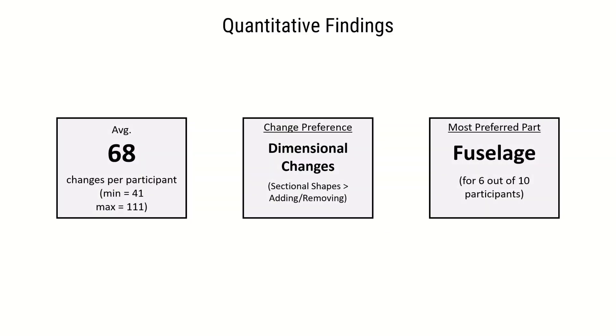The quantitative findings from our study showed that participants made an average of 68 changes, with dimensional changes being the most preferred type, and the fuselage being the most preferred part.